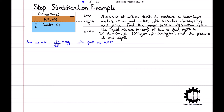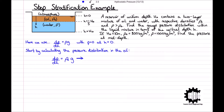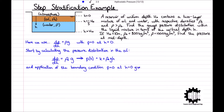Since the free surface boundary condition applies to the oil layer, we must start by calculating the pressure distribution in the oil. The pressure distribution becomes dP by dh equals rho 0 G. Integrating this with respect to h results in P at a depth h equals some constant K plus rho 0 G h. Applying the boundary condition P equals 0 at h equals 0 results in K equals 0. Therefore within the oil layer, P at a depth h equals rho 0 G h, for h greater than or equal to 0 and less than or equal to one third H0.